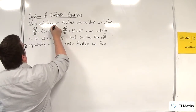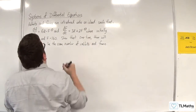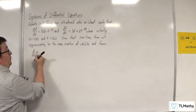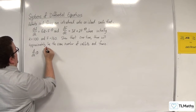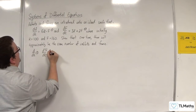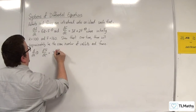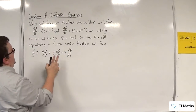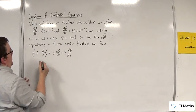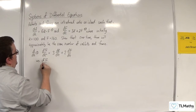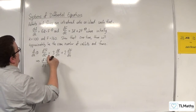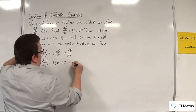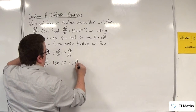Let's call the first equation 1 and the second equation 2. Taking equation 2 and differentiating with respect to t, we get d²f/dt² = 3(dr/dt) + 2(df/dt). Replacing dr/dt with 6r - f gives d²f/dt² = 3(6r - f) + 2(df/dt), which is 18r - 3f + 2(df/dt).